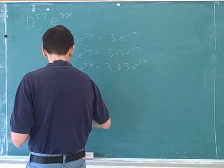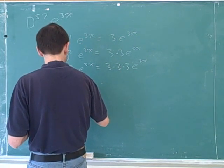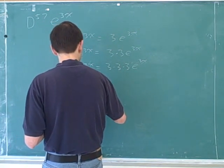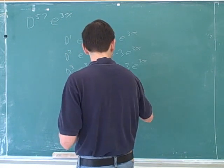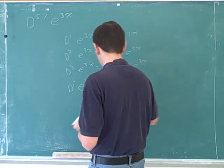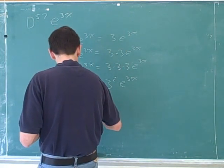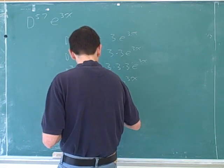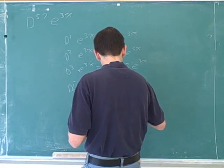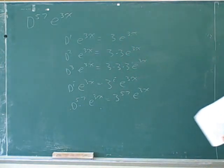So it looks like the general formula is d to the i-th power equals 3 to the i. And so d to the 57th should be 3 to the 57th power times e to the 3x.